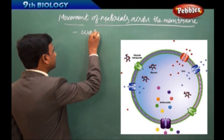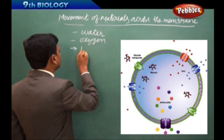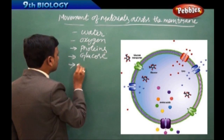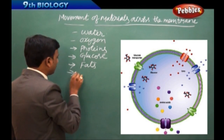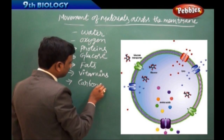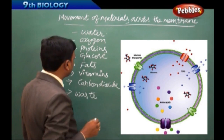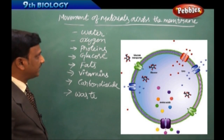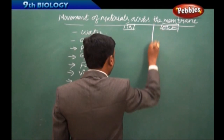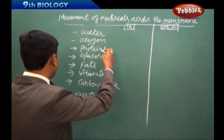The materials we will list are: water, oxygen, proteins, glucose, fats, vitamins, carbon dioxide, and waste. Now let us see whether they come in or go out of the cell. I am making it into two columns — in and out — and we are going to put a tick mark to indicate the direction of movement for each substance.